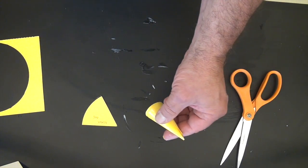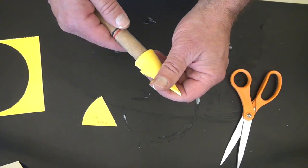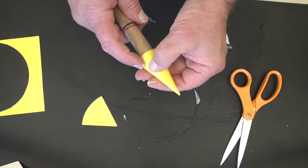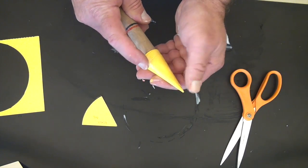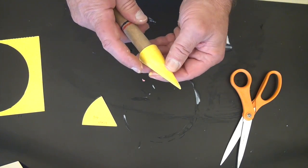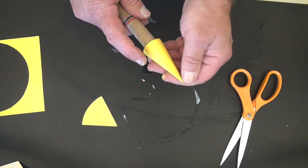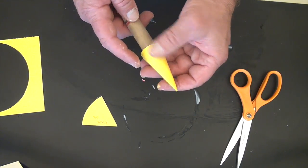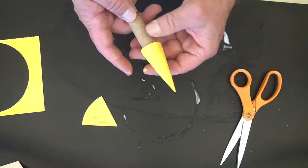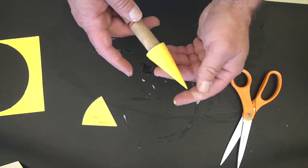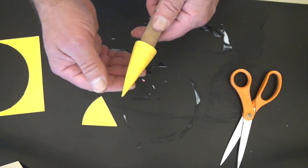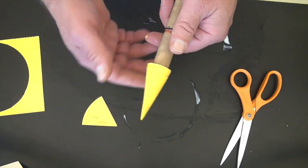And keep working this down. What you could do is take a dowel and put it on the dowel while you're working it. That will keep the nose cone round as you're working the seam down. After a while the glue gets tacky.